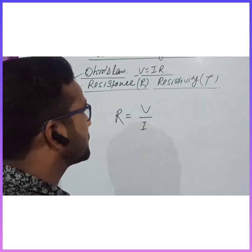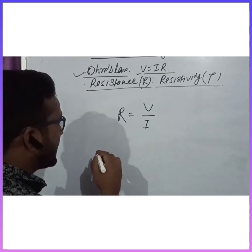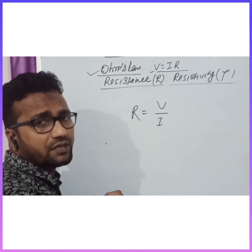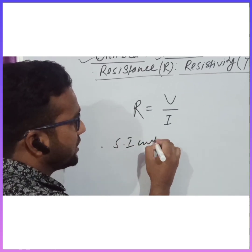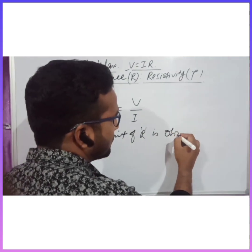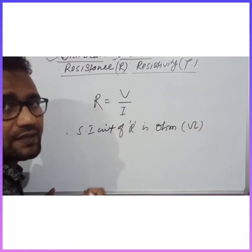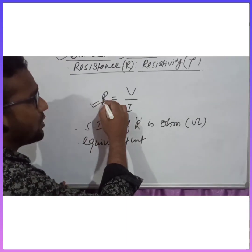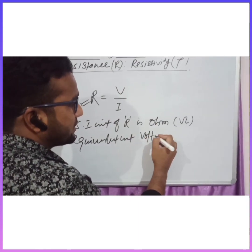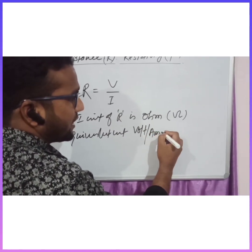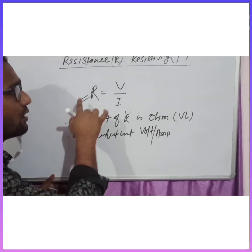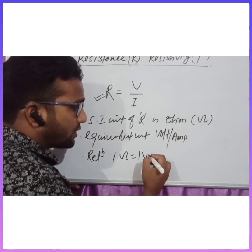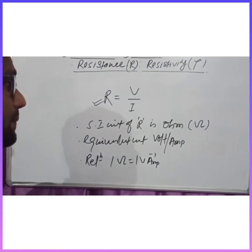So we can write R equal to V by I. With the help of this formula we can find R if V and I are given. The SI unit of R is ohm, symbolically written as Ω. The equivalent unit can be written as volt per ampere, and the relation is: one ohm equals one volt per ampere.